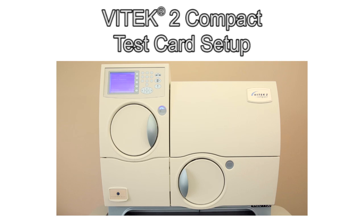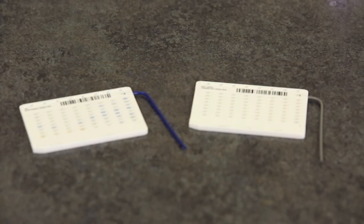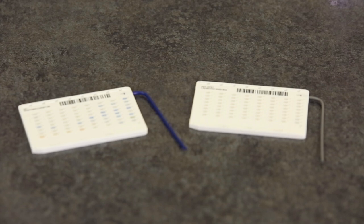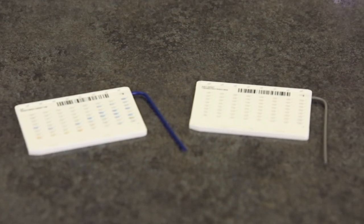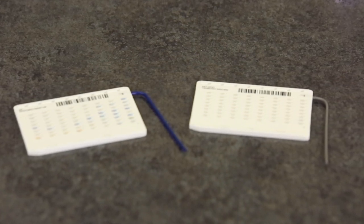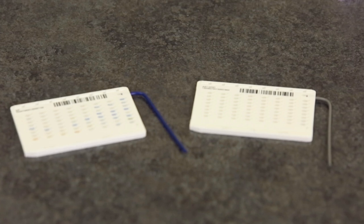The VITEK-2 Compact System simplifies and speeds the identification and susceptibility testing of bacterial and yeast organisms. The purpose of this video is to demonstrate and explain how to set up isolates and test cards for processing on the VITEK-2 Compact instrument.